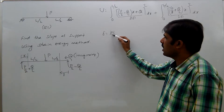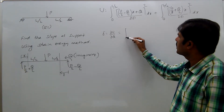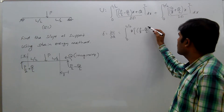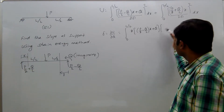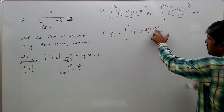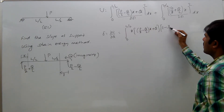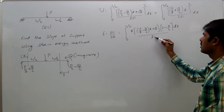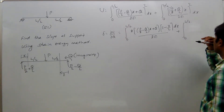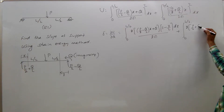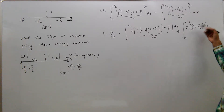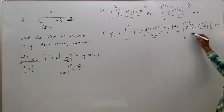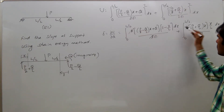Now, delta equals partial U by partial Q. That equals integral from 0 to L/2 of 2 times (P/2 minus Q/L into x plus Q) into the differentiation of this expression with respect to Q, which is (1 minus x/L), dx divided by 2EI, plus integral 0 to L/2 of 2 times (P/2 plus Q/L into x) into differentiation with respect to Q, which is x/L, dx divided by 2EI. The 2s get cancelled.